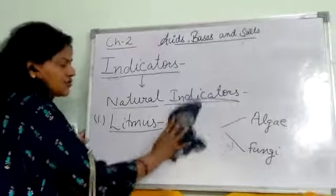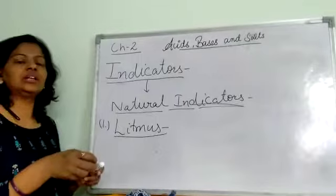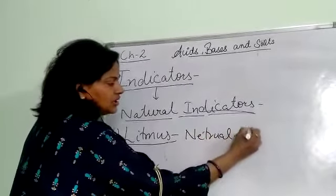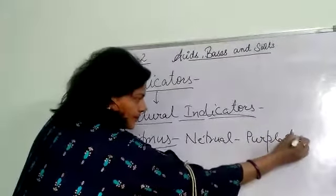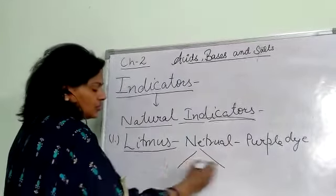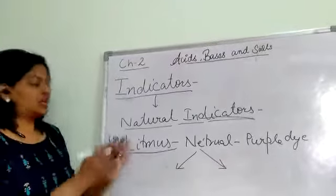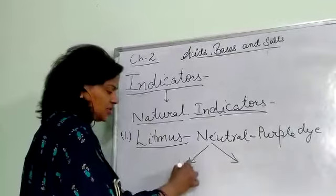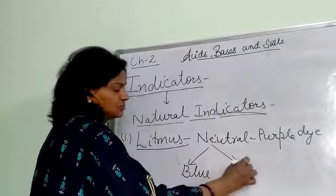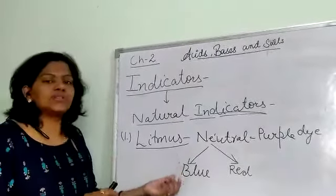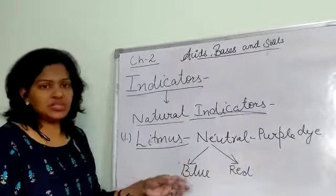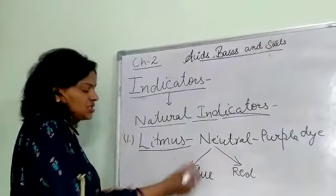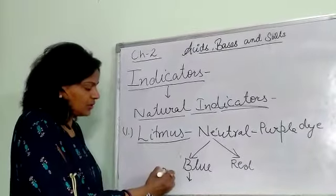The juice and extract from lichen is used as the indicator liquid. In a neutral medium, the natural color of litmus is purple. This purple color can then be changed into blue litmus or red litmus depending on the medium.